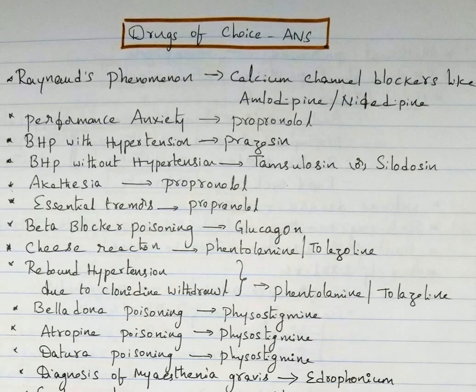Rebound hypertension due to clonidine withdrawal: phentolamine. Belladonna poisoning: physostigmine. Atropine poisoning: physostigmine. Datura poisoning: physostigmine. Belladonna and datura both have similar symptoms to atropine poisoning, so for all three we give physostigmine.